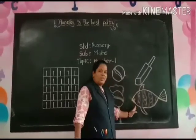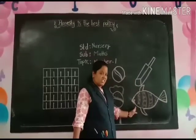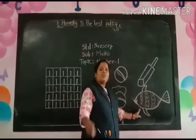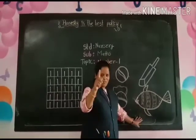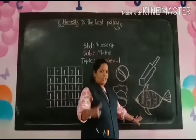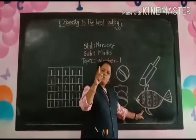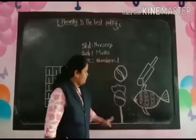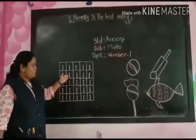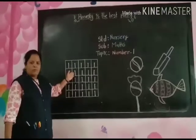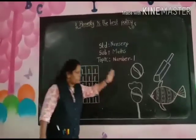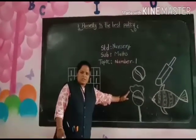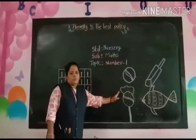And this is a fish. How many fish here? One fish. How many fish here? One fish. Do you understand? How many fish here? One fish. Do you understand?